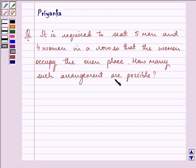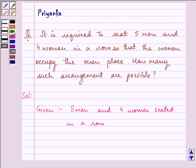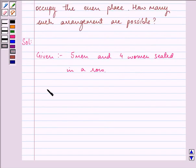Now here we are given 5 men and 4 women seated in a row. Representing place numbers of a row as follows: we have 1, 2, 3, 4, 5, 6, 7, 8, 9.